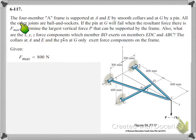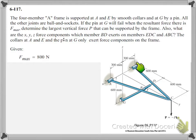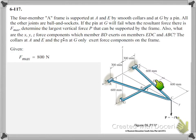In the problem statement it says that we have a 4-member A-frame supported at A and E by smooth collars. So here the component is free to rotate about the X axis, but can't move in the X, Y, or Z direction. At G it's supported by a pin connection, and all the other joints are ball and socket joints — connections at D, B, and joint F.